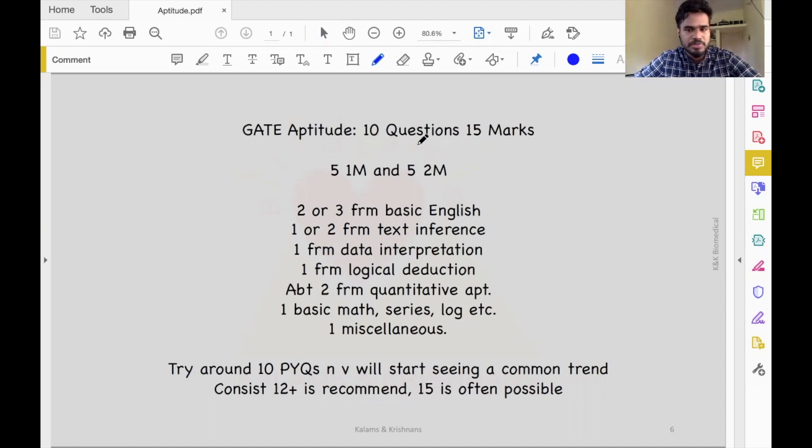In GATE aptitude, there are 10 questions for 15 marks. There are 5 one-mark and 5 two-mark questions. If you look at about 10 previous year question papers, you start seeing a trend.